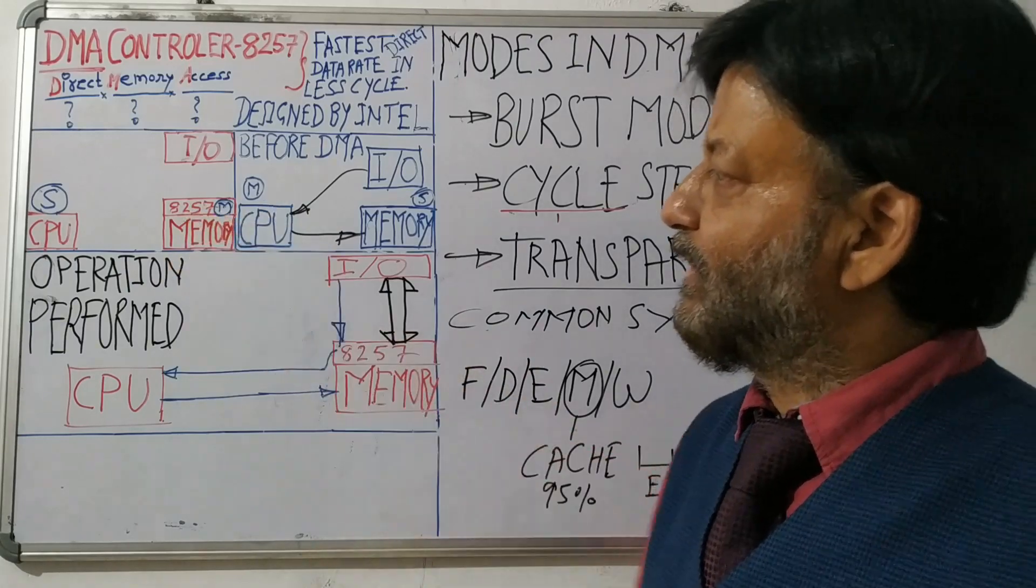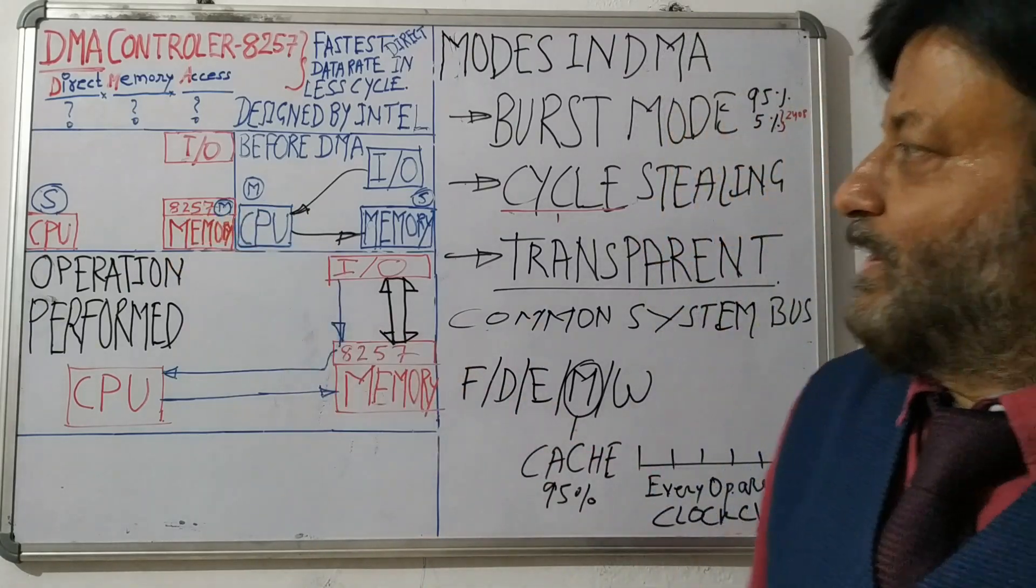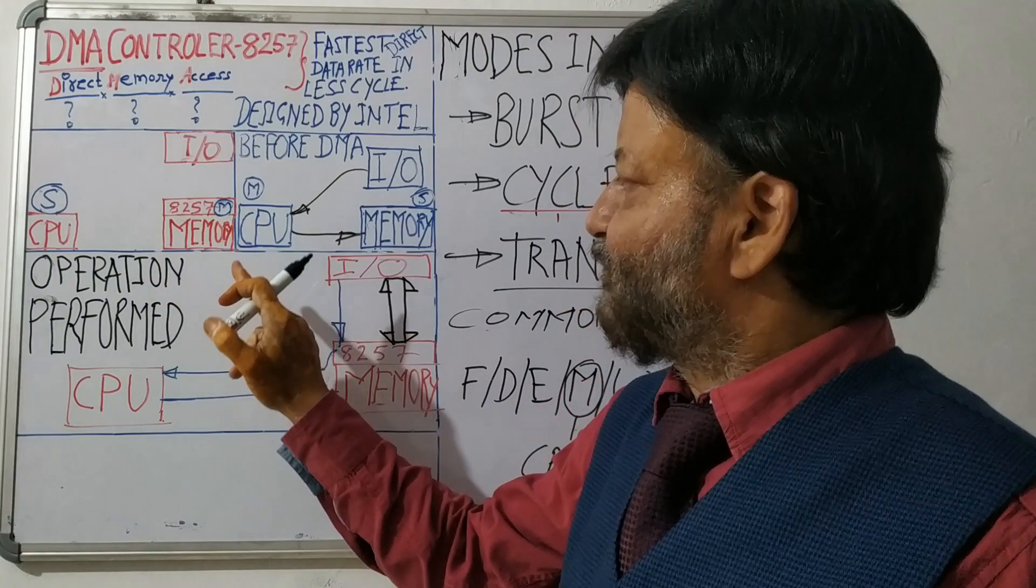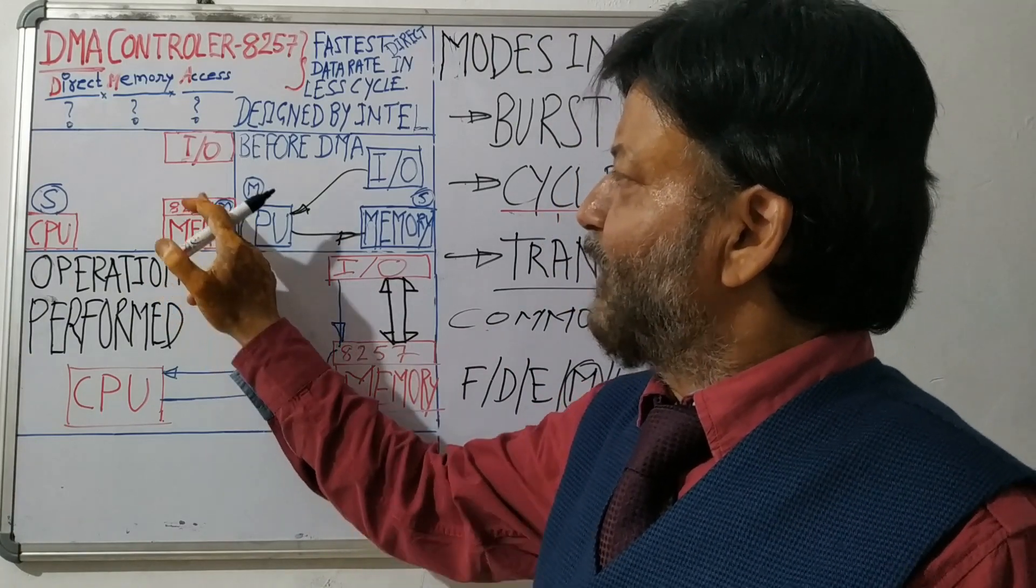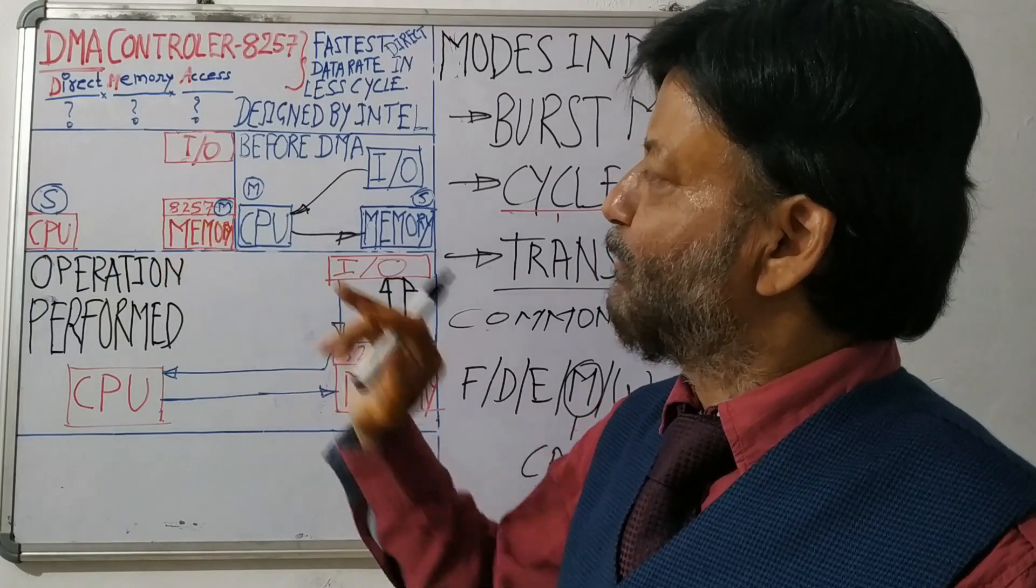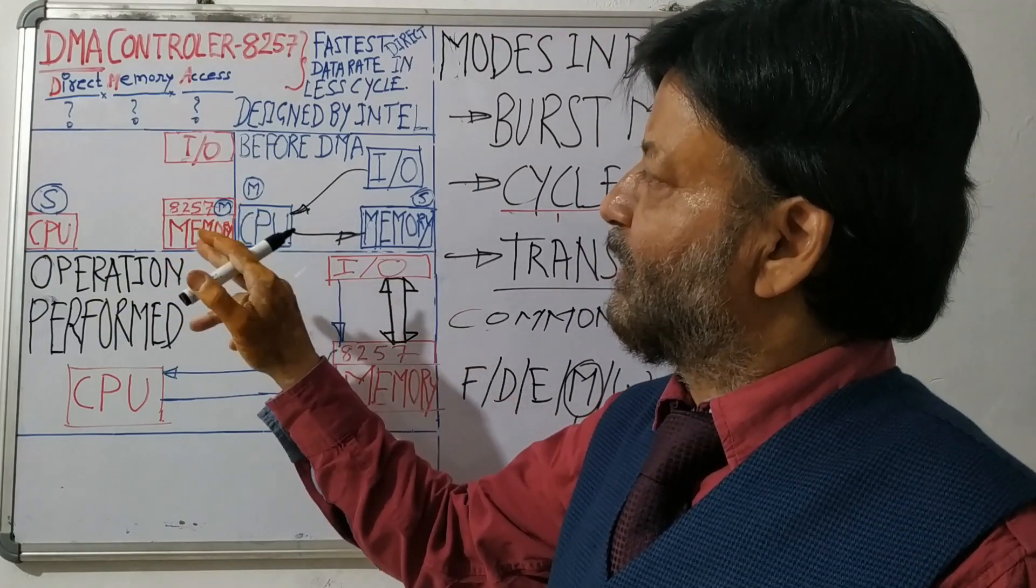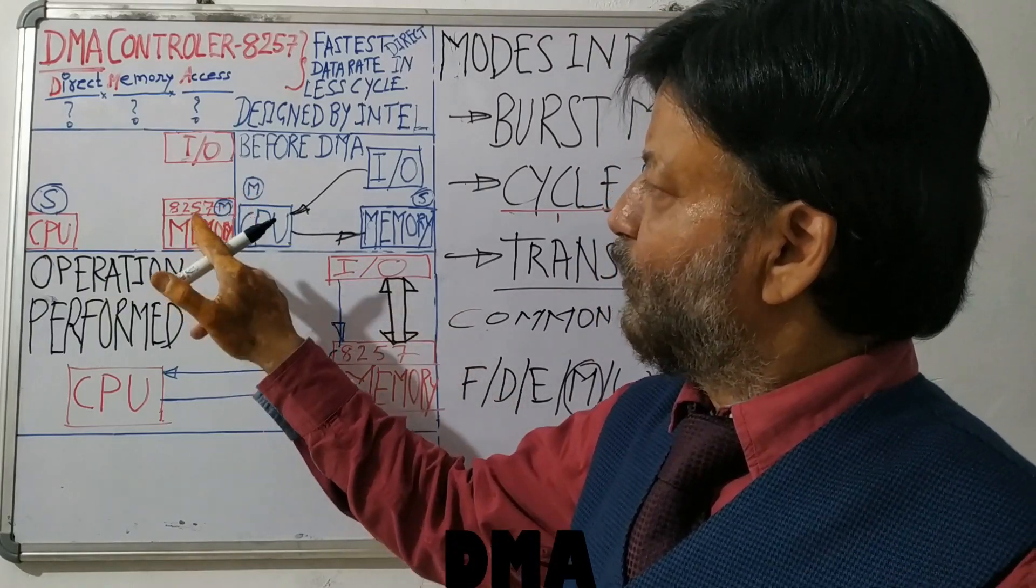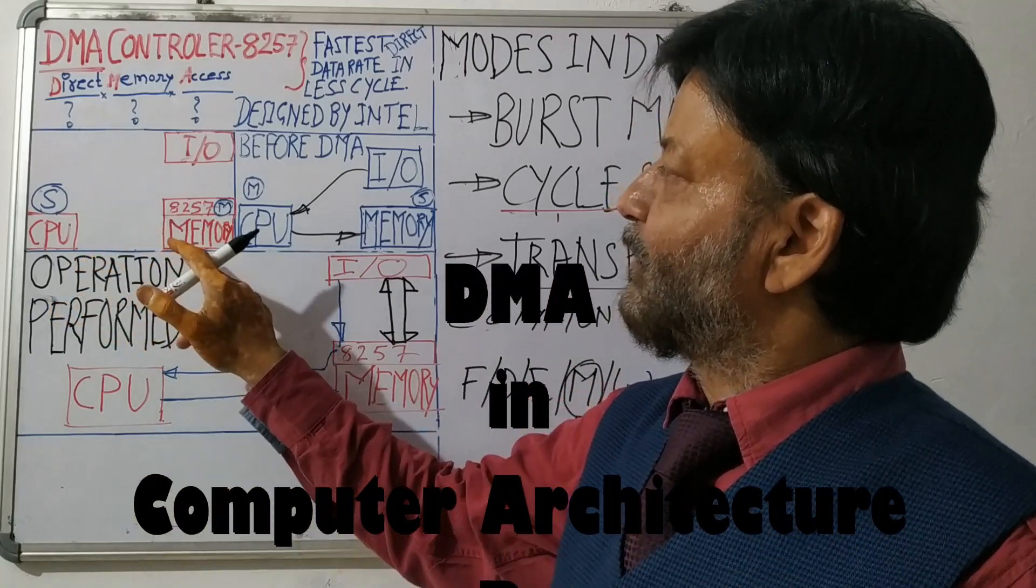Now let's see when the DMA is there. So that is DMA 8257 with memory. This is direct memory access. We can access this memory directly means that we do not contact for any data transfer to CPU.